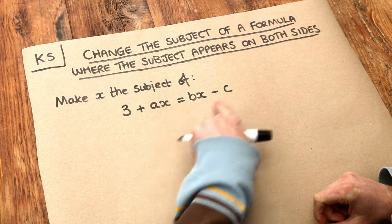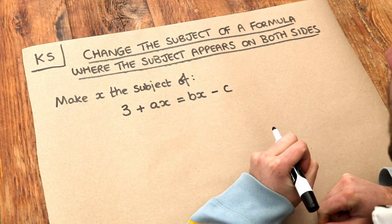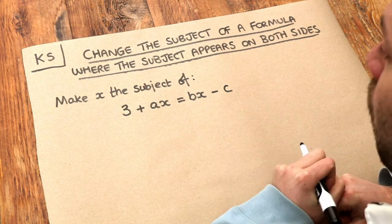So we want to make x the subject of this equation. To make x the subject means that you want to get x on its own on one side of the equation.